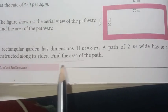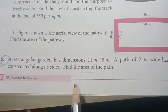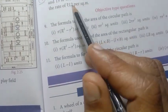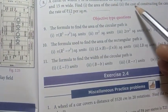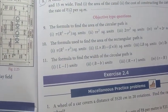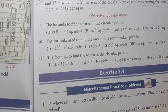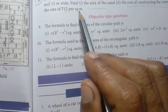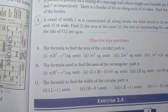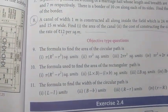Rectangle — find the area of the path, sixth one important question. Eighth one important question: area of a canal — cost of constructing the canal at the rate of rupees 12 per square metre. Eighth one is an important question.